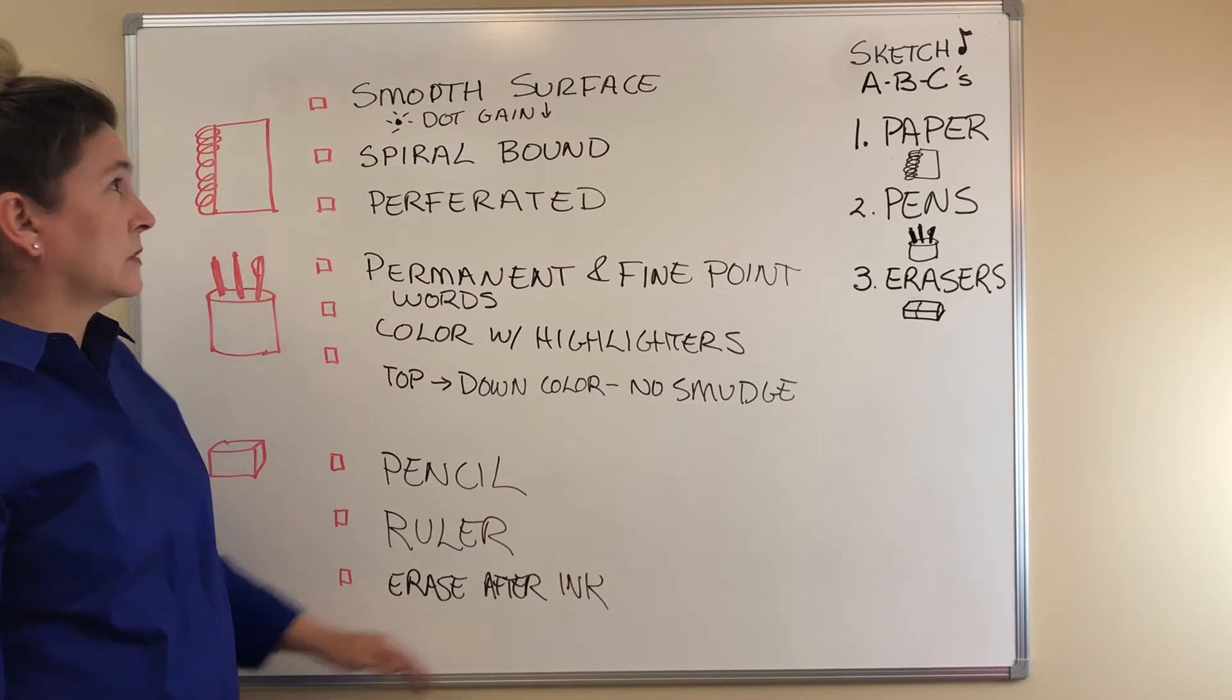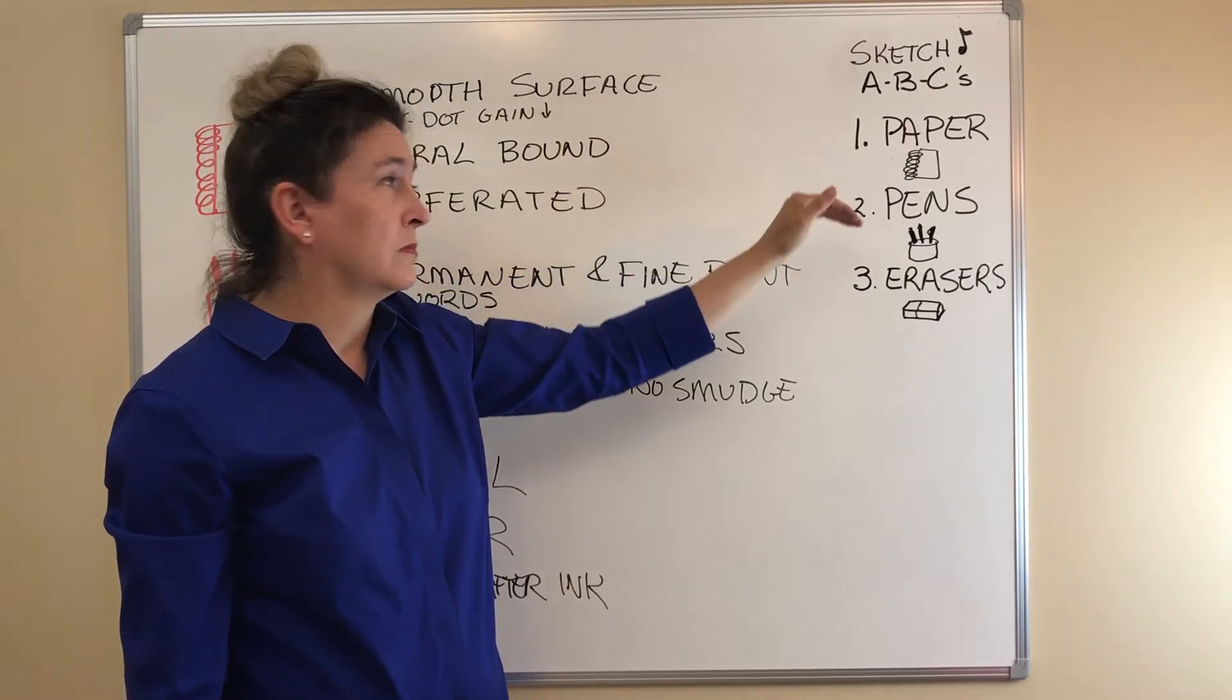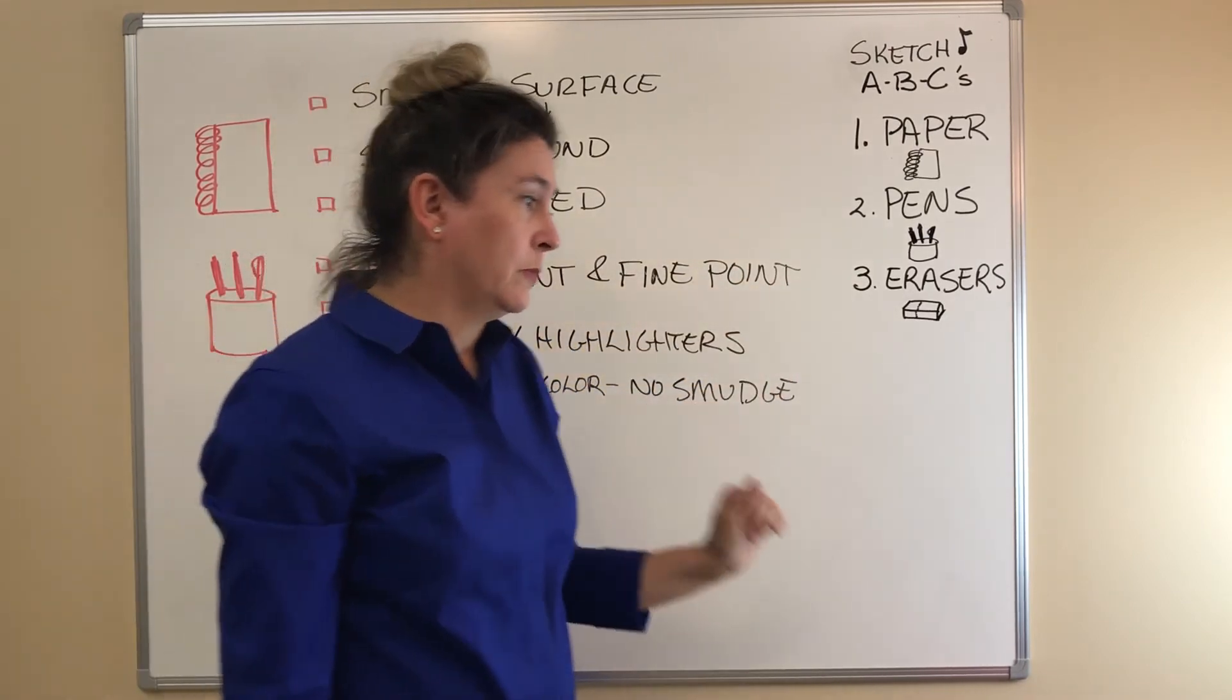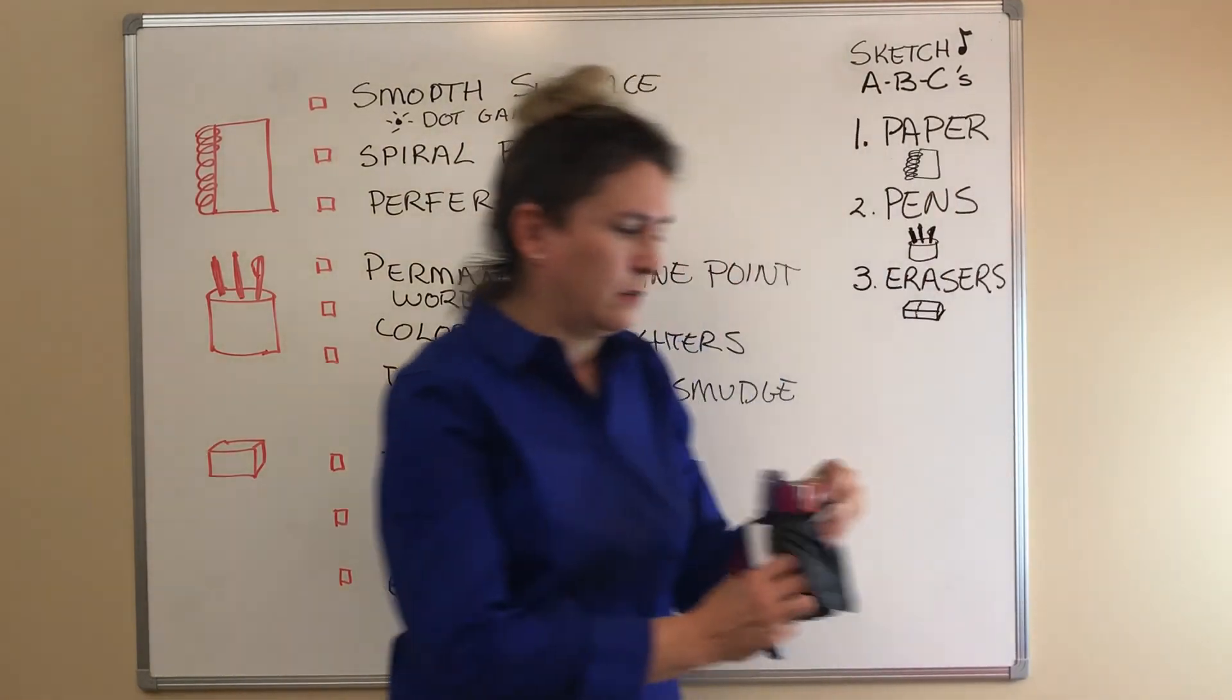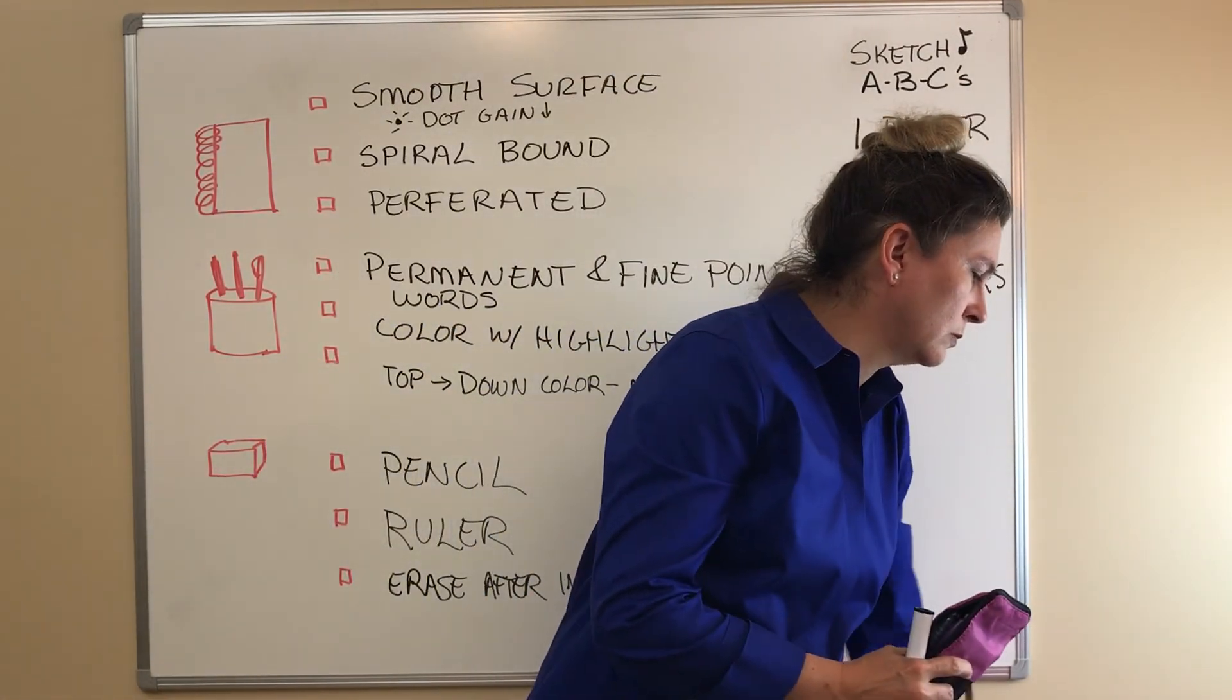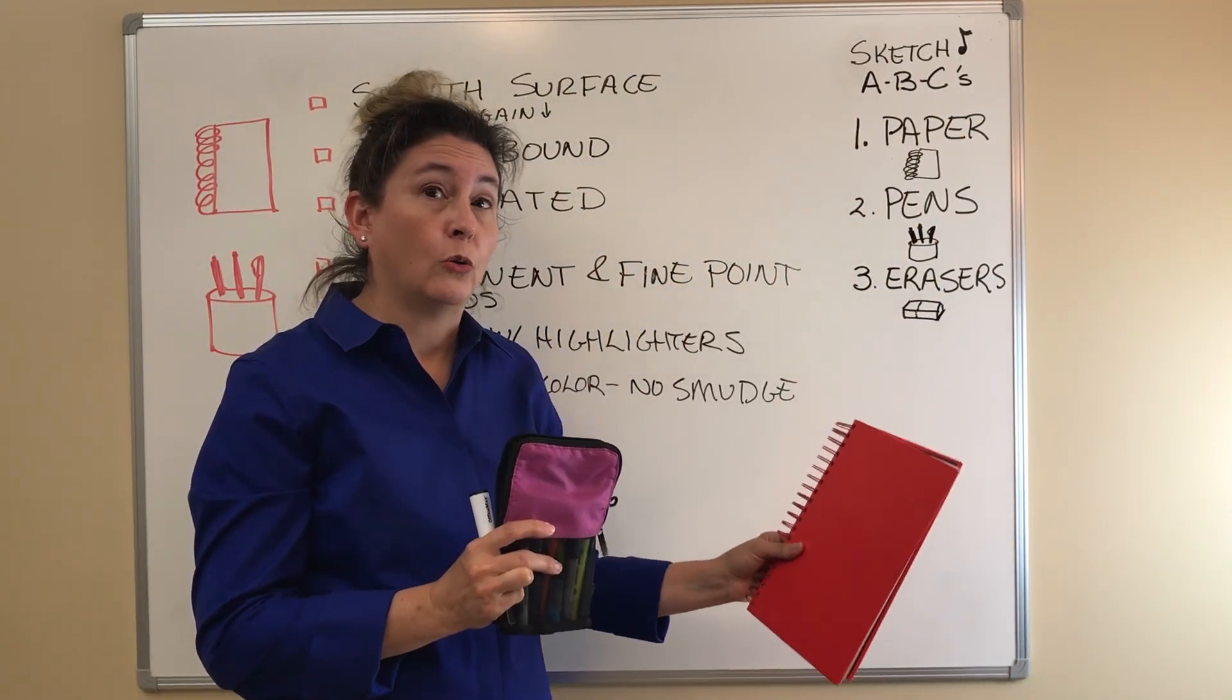So let's go over this. We've got three things. The right paper, the right pens, and an eraser. And then keep them all in pencil case so you can take them along with you, along with your spiral bound notebook, and you'll be ready to go at any time.